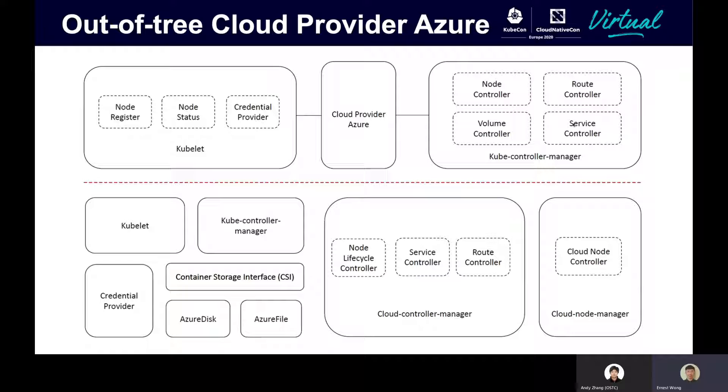You have the kube controller manager, which contains a lot of controllers, and each controller has a reconciliation loop that reconciles for a specific Kubernetes resource. Based on the diagram, you can see that Cloud Provider Azure sort of coexists between the kubelet and the kube controller manager, which adds a lot of complexities during development. After moving most of the cloud-dependent logic out of tree, you're left with three major interfaces. First, the external cloud controller manager and cloud node manager.